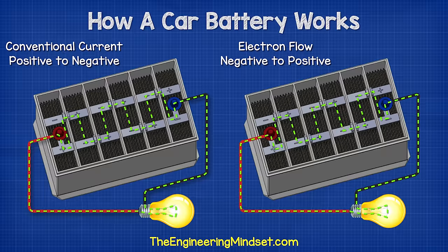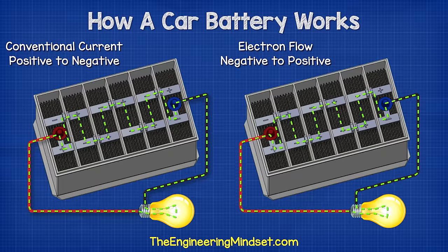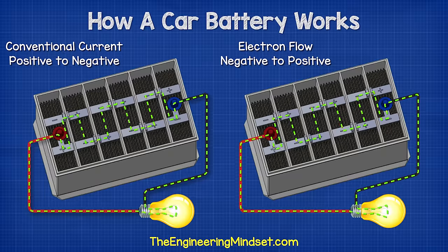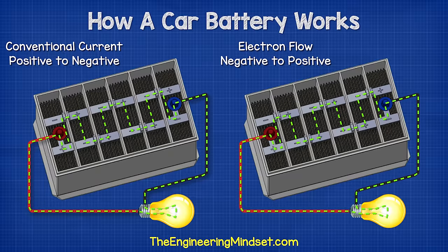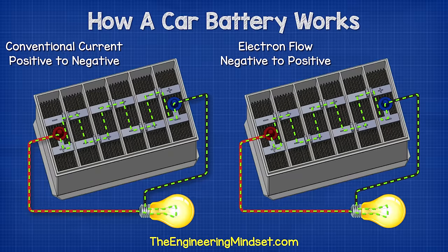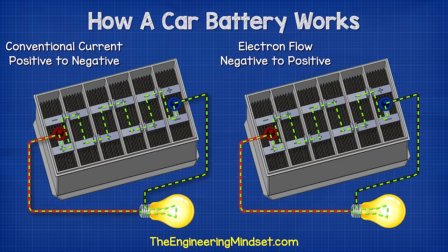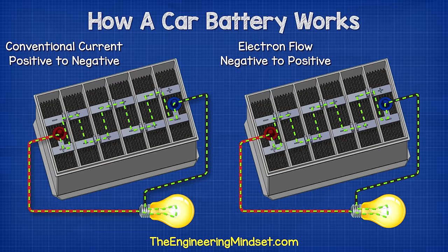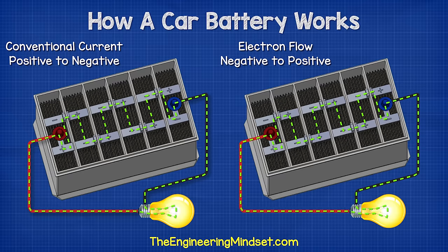What's actually happening is the electrons are flowing in the opposite direction — from the negative to the positive. We'll cover that and see why a little later in this video.